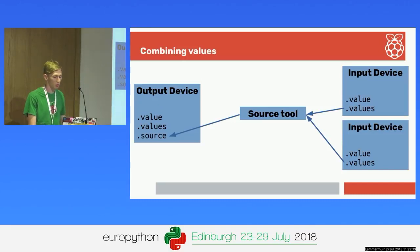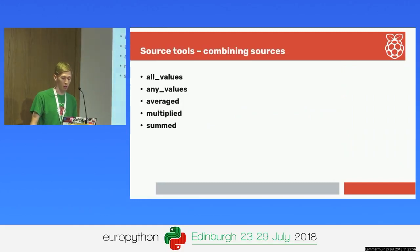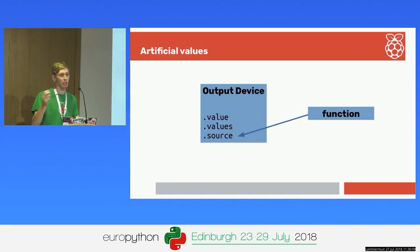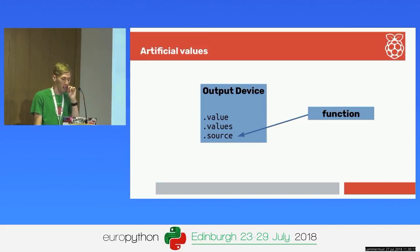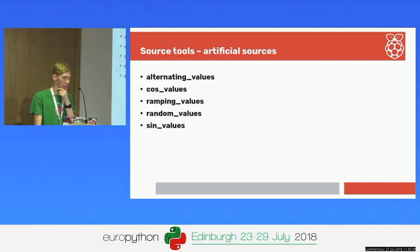You can have source tools which combine multiple sets of values. Two input devices feed into a function that does something with those two values and passes the result to an output device. Combining tools include all, any, averaged, multiplied, and summed. So you could have an LED that's only lit when two buttons are both pressed using all values - the AND of those two buttons. You can also provide artificial sources - a function passed into the source that isn't coming from a GPIO device, like cosine values, sine values, random values, or a custom function providing values from some artificial source.